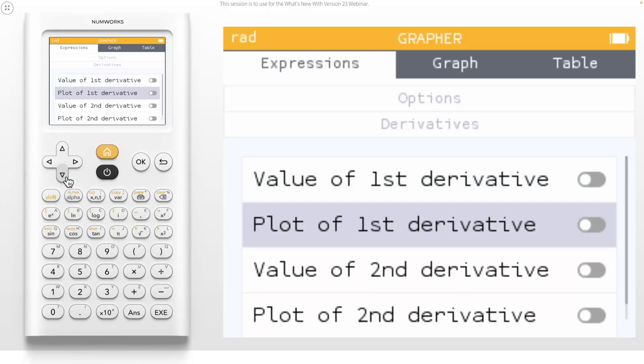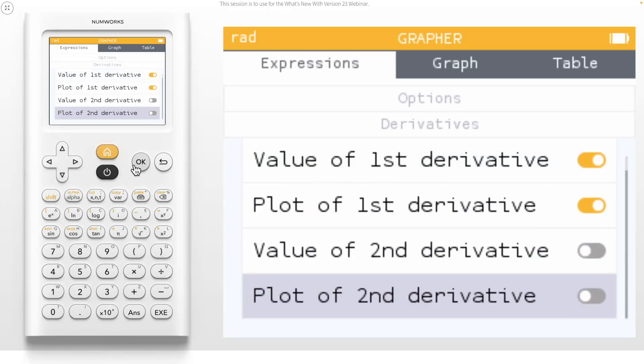Since we used a cubic function, let's turn on the plot for the first and second derivatives. Notice that turning the plot on will automatically turn the value on as well so that it will also be included in the table in addition to the graph. We can now press the back button twice to go back to the list of functions.